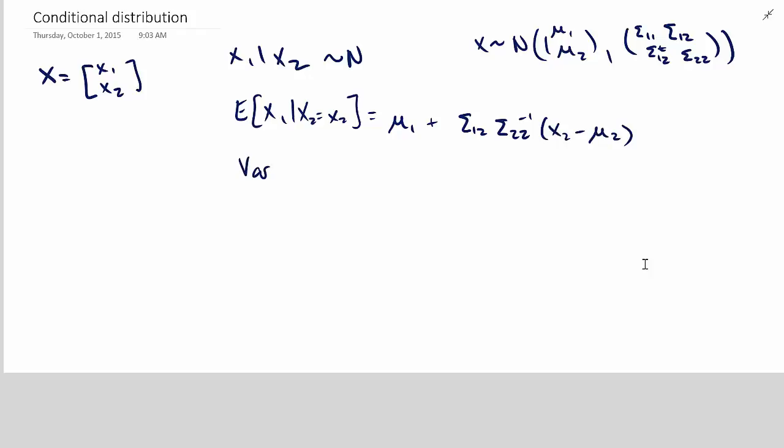And then the variance of x1, given that x2 equals little x2, is then equal to sigma 1 1. So what we would hope it would be, because that would be easy, just the same as the marginal variance, but of course there's got to be other stuff, minus sigma 1 2, sigma 2 2 inverse, you could either write it as sigma 2 1 or sigma 1 2 transpose. I like to write it as sigma 1 2 transpose.